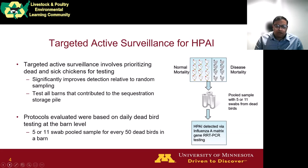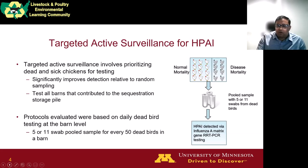This significantly improves detection relative to random sampling of birds in a house. We considered protocols based on daily dead bird testing at the barn level, specifically sampling a 5- or 11-swab pooled sample for every 50 dead birds in a barn, and also testing all barns that contributed manure to the sequestration storage pile. The figure on the right shows the active surveillance process.